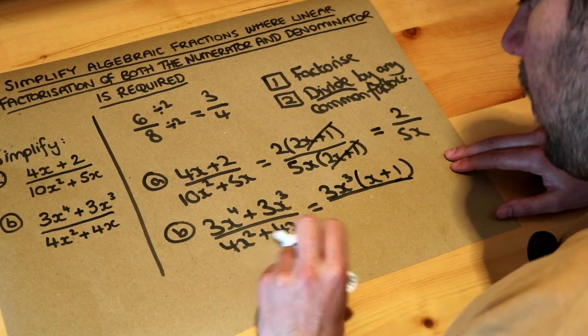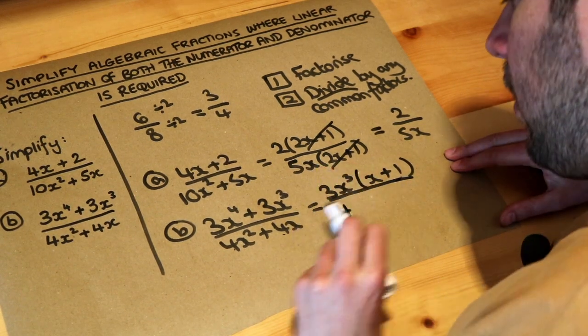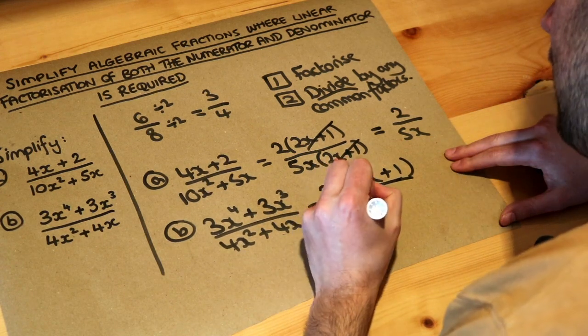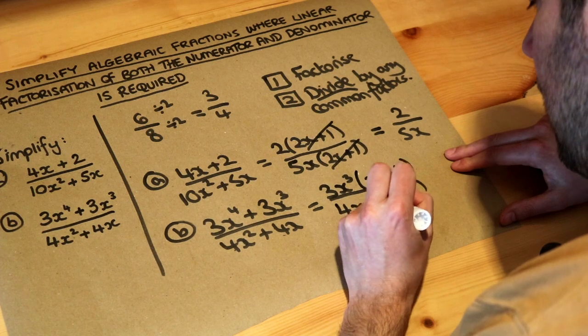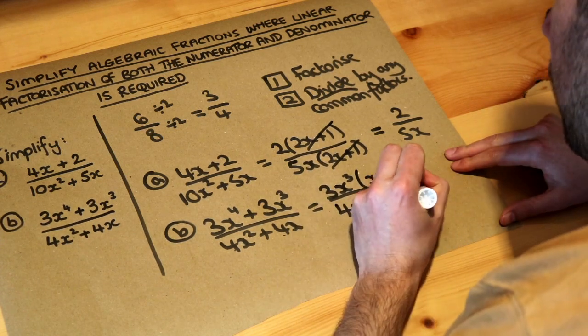And then the bottom, what do these have in common? Well they have 4 in common, and x² and x have x in common. Now 4x times what is 4x²? It's x. 4x times what is 4x? It's plus 1.